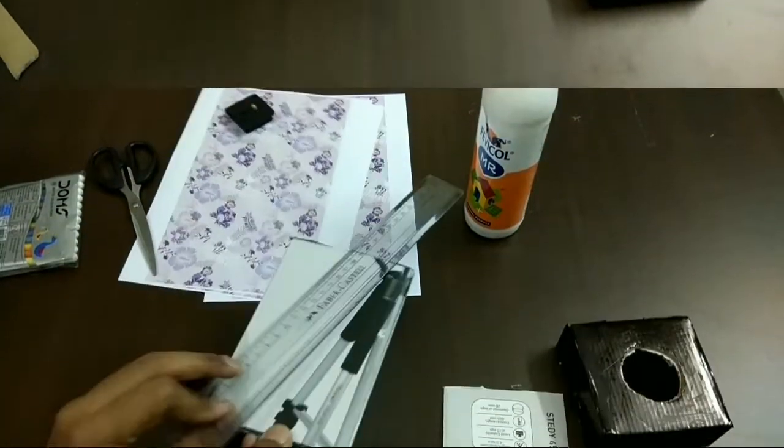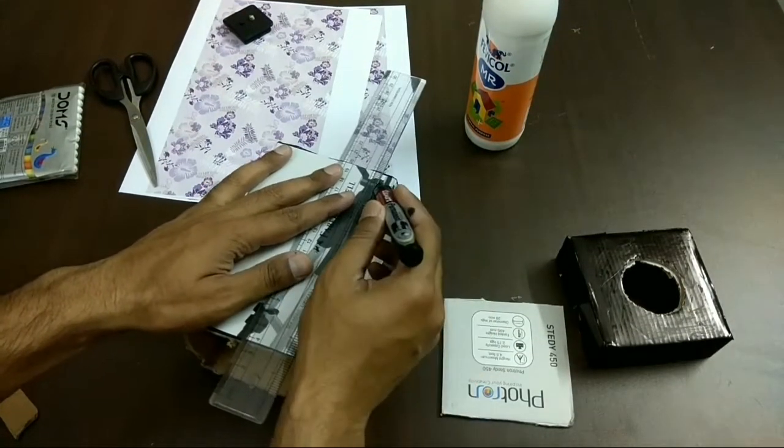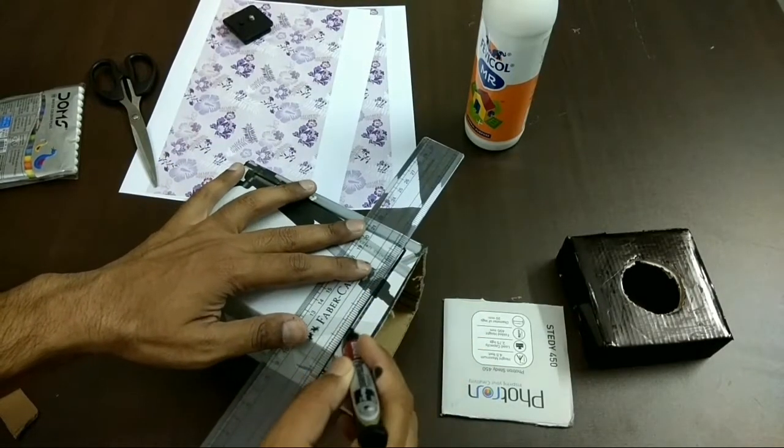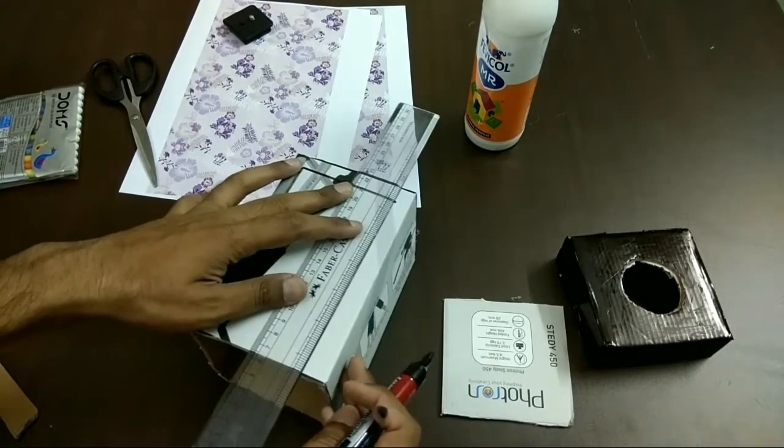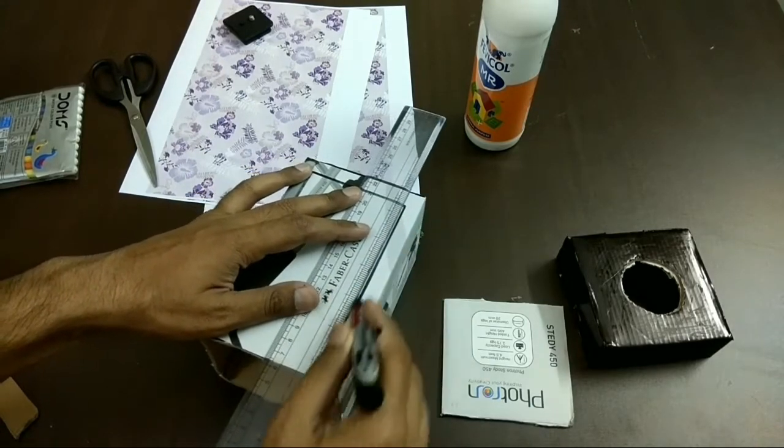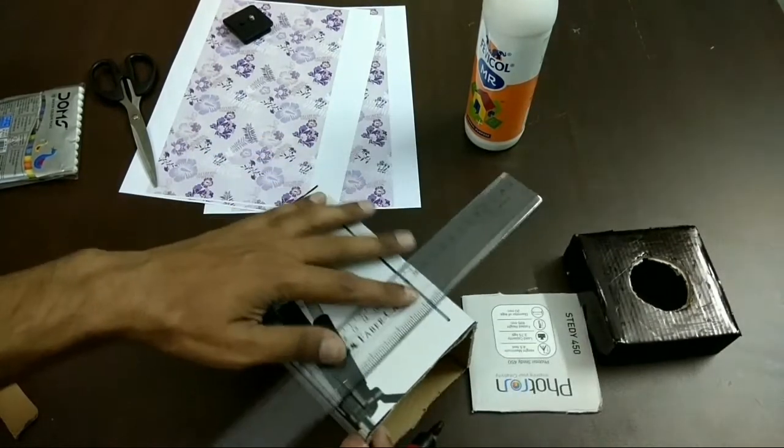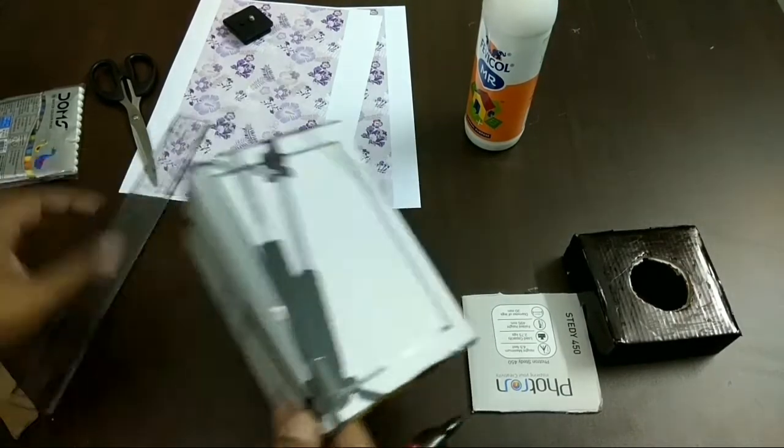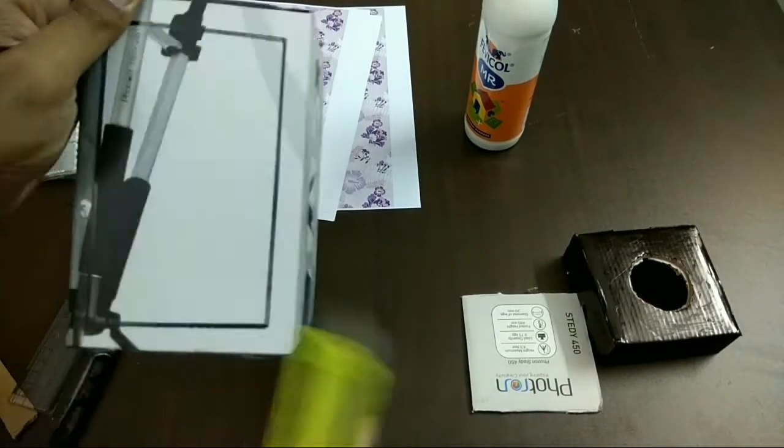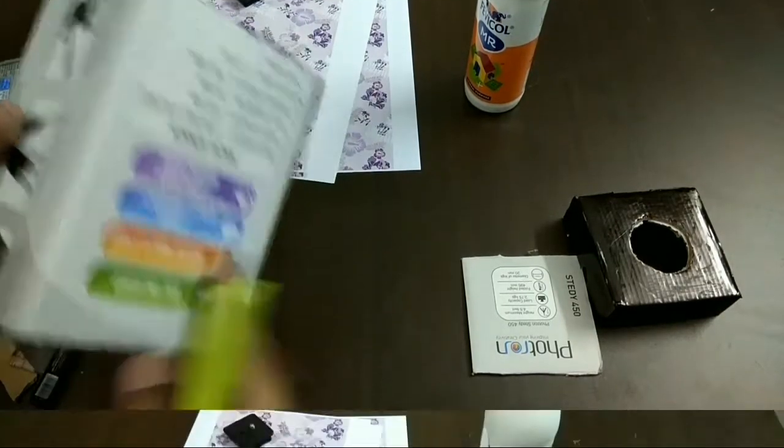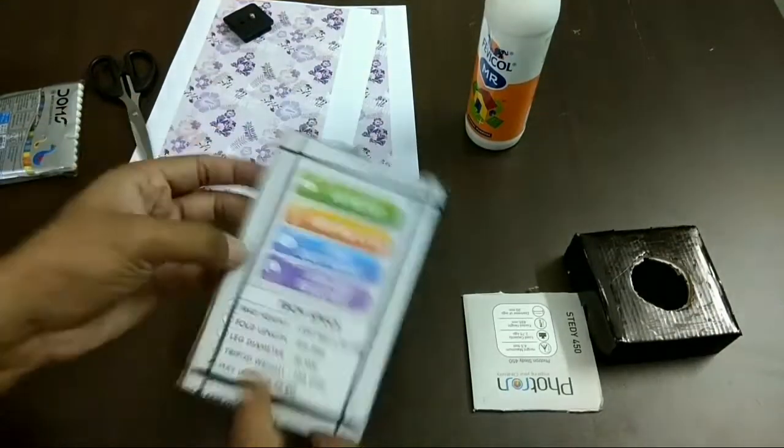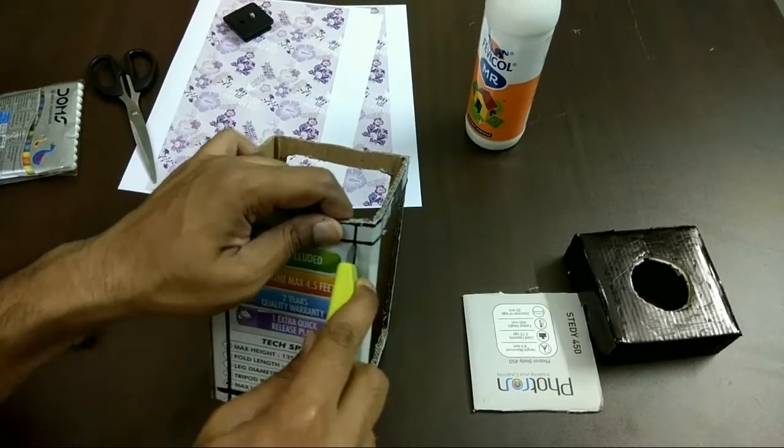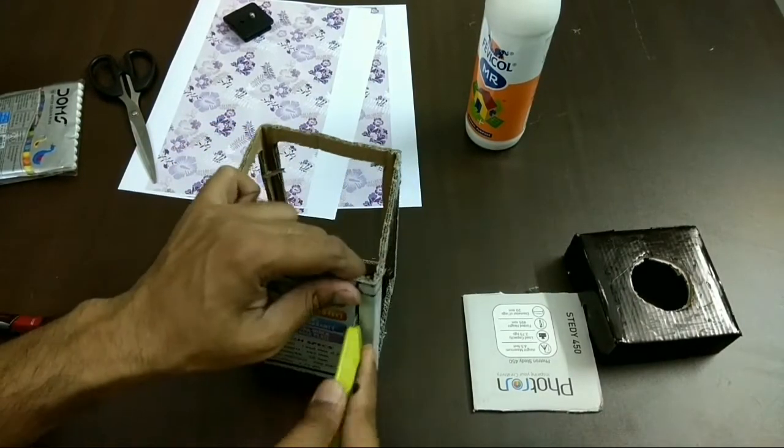Again you have to use a scale. And the margin should be 1 cm from all the sides. And you have to draw the lines so that you can cut them exactly. The rectangular part which you are seeing in the center, you have to cut that part out using the paper knife from all the 4 sides. See, I have done it from the 3 sides and I am doing the 4th side now.